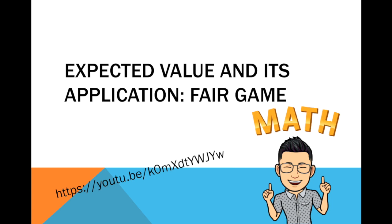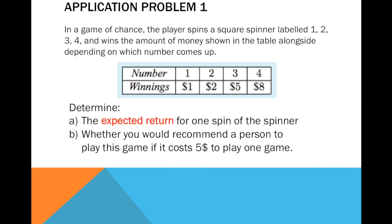Most of the application problems related to this are about playing a game that involves money. In a game of chance, the player spins a square spinner labeled one, two, three, and four, and wins the amount of money shown in the table, depending on which number comes up. So if the spinner lands on one, you win one dollar; if it lands on two, you win two dollars.